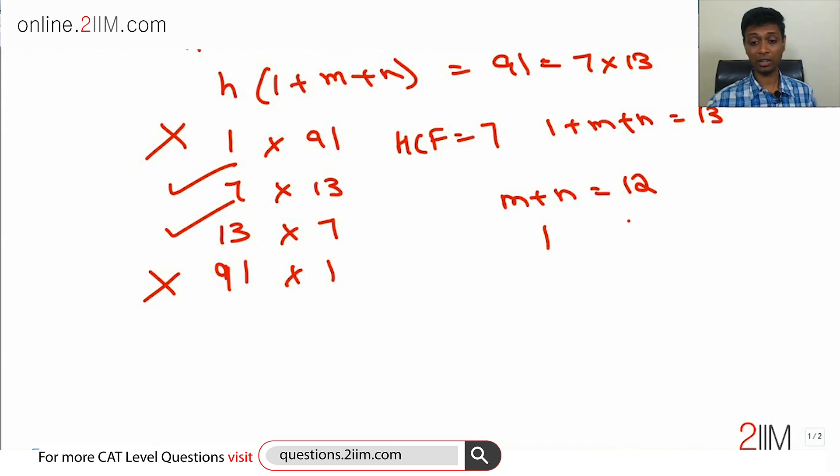So m and n could be 1 and 11, 2 and 10, 3 and 9, 4 and 8, 5 and 7, 6 and 6. And then the other way around, that is still possible. 1 and 11 is possible.